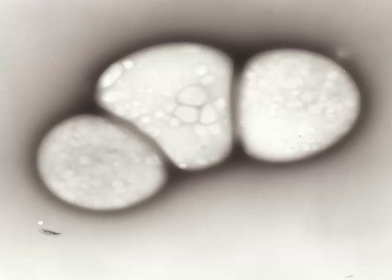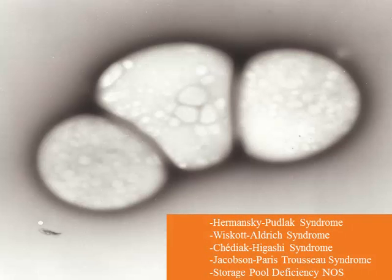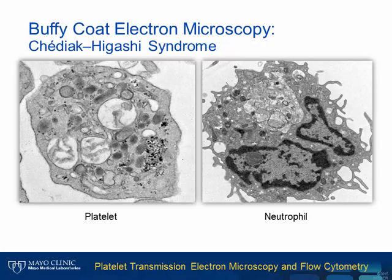Sometimes we need to look at white cells. For example, among the differential diagnosis of marked dense granule deficiency, we can diagnose Chediak-Higashi syndrome by examining abnormal lysosomal inclusions in neutrophils by buffy coat electron microscopy. Besides dense granule deficiency, abnormal inclusions are present in neutrophils and platelets. This case was a confirmed case of Chediak-Higashi syndrome.